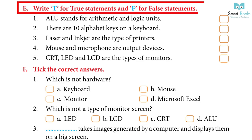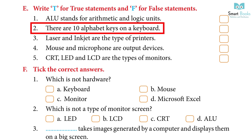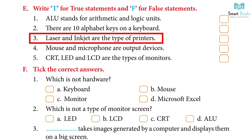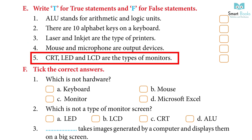E. Write T for true statements and F for false statements: 1. ALU stands for Arithmetic and Logic Unit — Answer: True. 2. There are ten alphabet keys on a keyboard — Answer: False. 3. Laser and inkjet are types of printers — Answer: True. 4. Mouse and microphone are output devices — Answer: True. 5. CRT, LED and LCD are types of monitors — Answer: True.